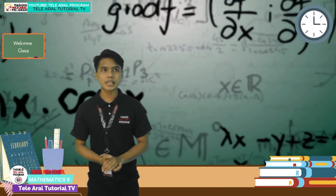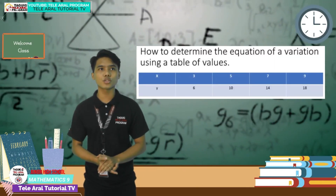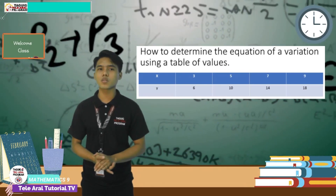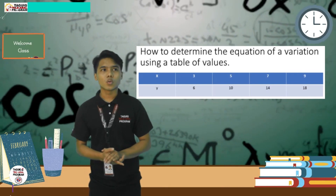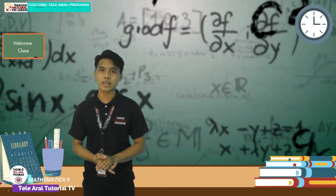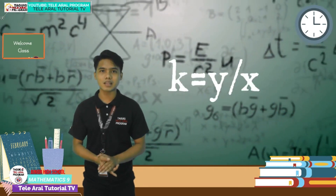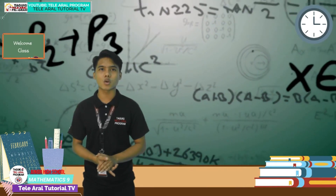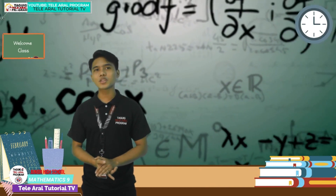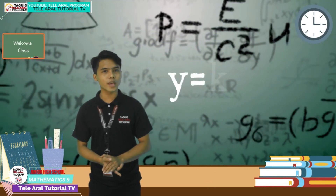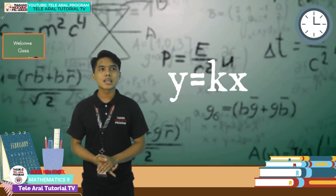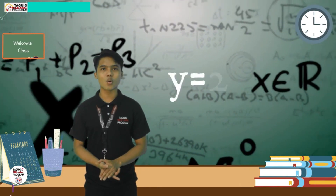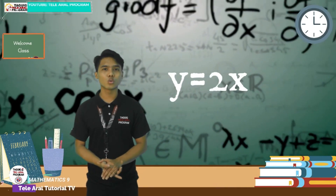Now we will determine the equation of variation using the table of values. Since we already solved the constant of variation, which is 2, using the formula k equals y over x, we will use this value to determine the equation. All we need to do is plug the solved value of k into y equals kx. Therefore, the equation of variation is y equals 2x.